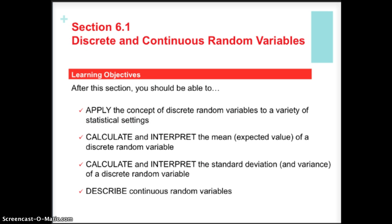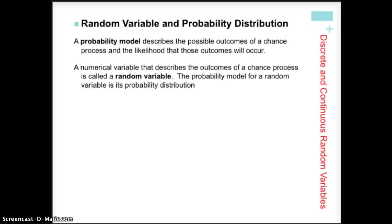By the end of this section we're going to be able to calculate and interpret both the mean and the standard deviation. Remember, standard deviation is the square root of the variance. We're going to describe continuous random variables using our GSOX model and apply the ideas of discrete and continuous random variables to a variety of different real-world problems.